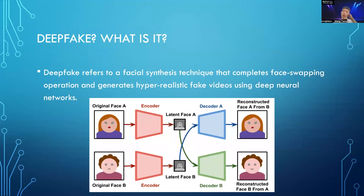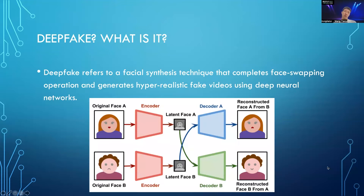After the model is trained, in order to swap a source identity onto a target face, the well-trained autoencoder takes in the target face as input and passes the encoder-learned facial features to the unique decoder corresponding to the source facial identity. The decoder then generates a face with the identity of the source person while maintaining the facial expression and action of the input target face. For example, we input face A through the encoder, which learns general facial features and projects them into a latent space. We then pass latent face A through decoder B, and the reconstructed result has the identity of B but the facial expressions and attributes of face A. That is how DeepFake face swapping works.